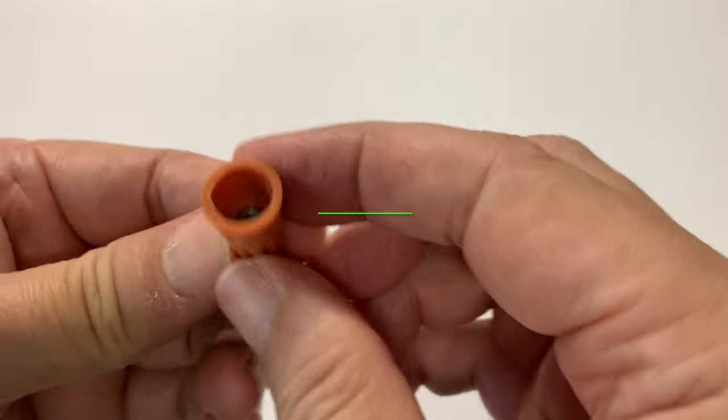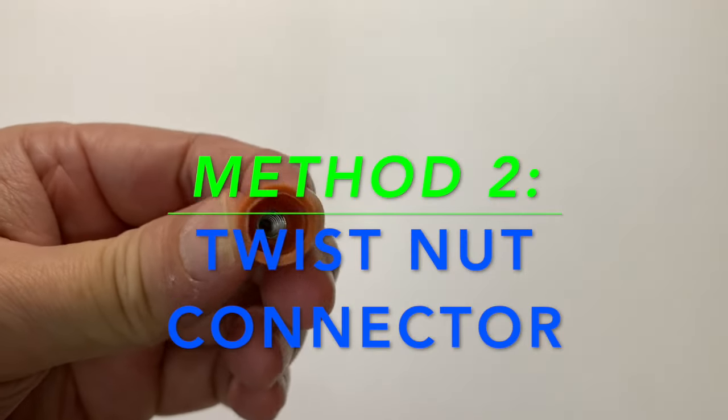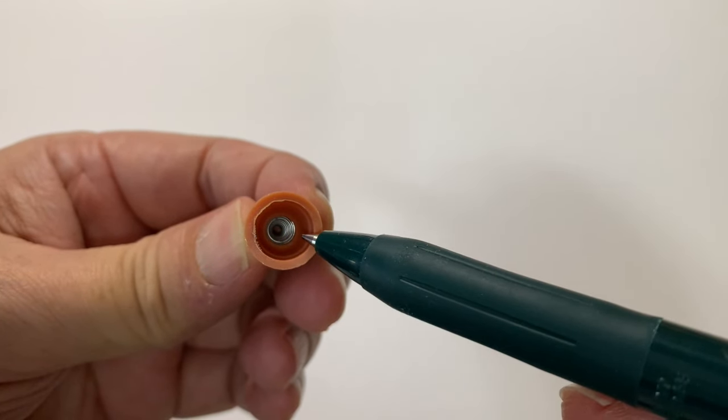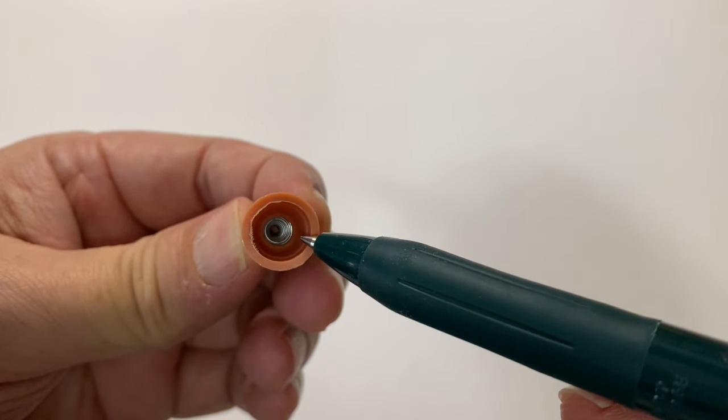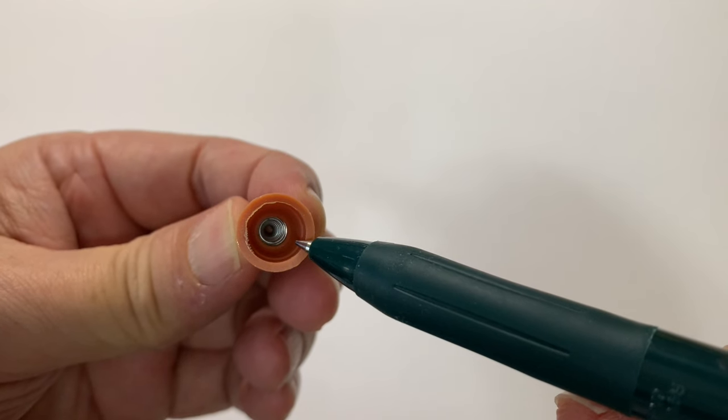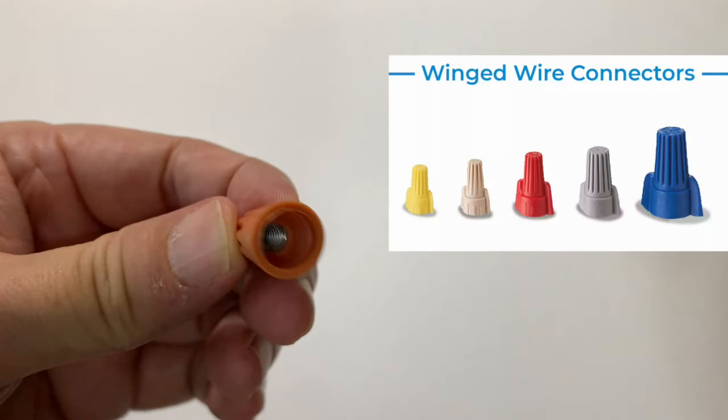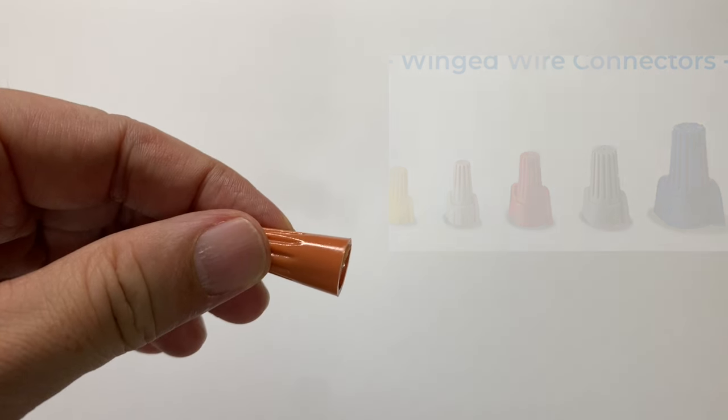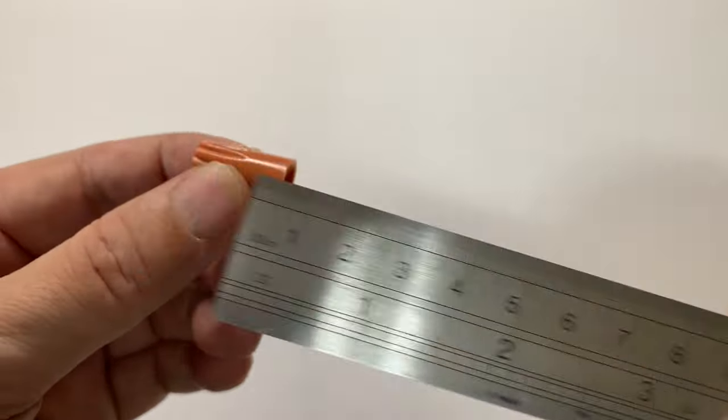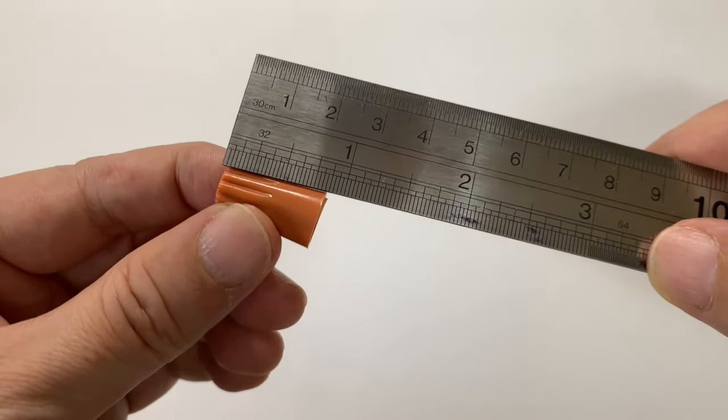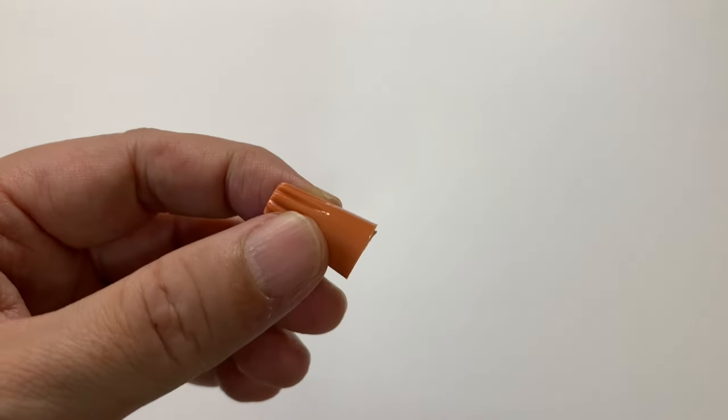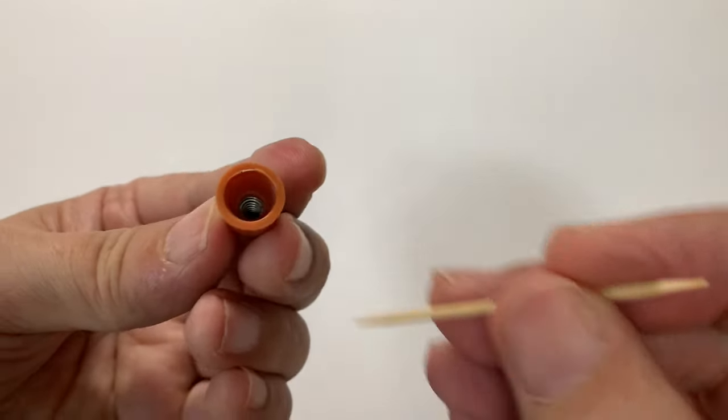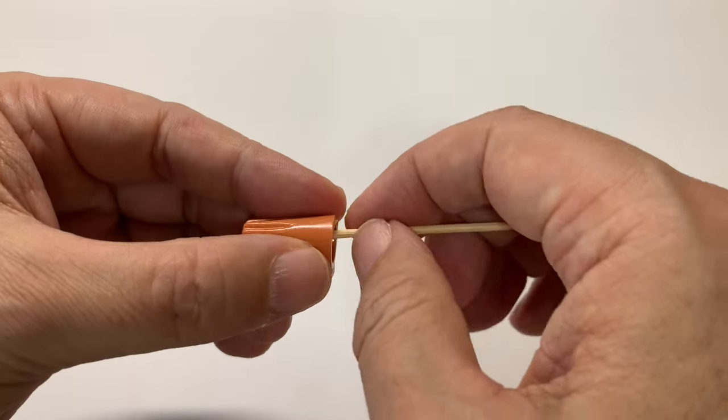Another method is to use a connector commonly known as a twist nut. As you can see, there's a spiral spring embedded in the nut that grips the tip of two wires together to allow you to twist them. There are a variety of sizes and colors as well. This nut here has an outer length of 2 centimeters or three-fourths inches.